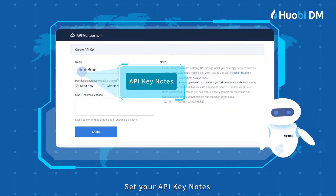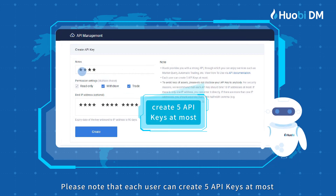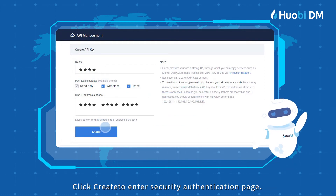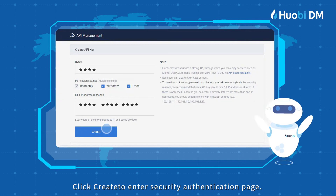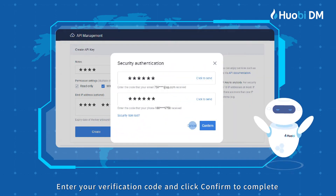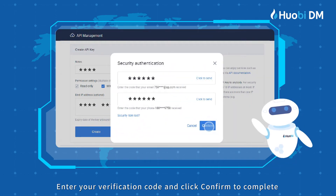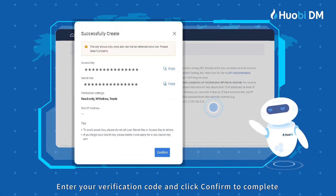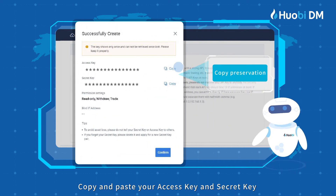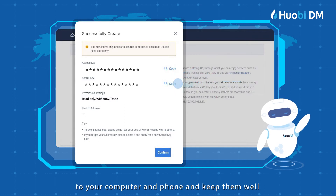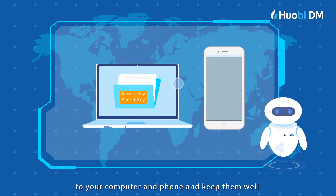Set your API key notes. Please note that each user can create five API keys at most. Click Create to enter the Security Authentication page. Enter your verification code and click Confirm to complete. Copy and paste your access key and secret key to your computer and keep them safe.